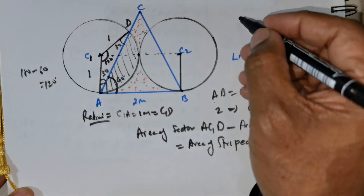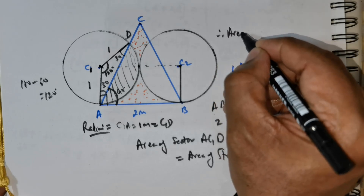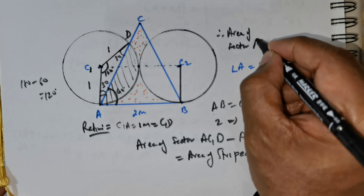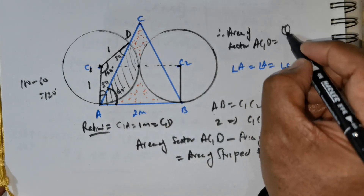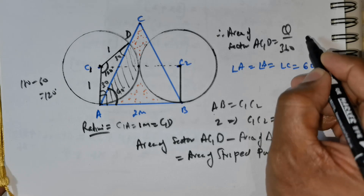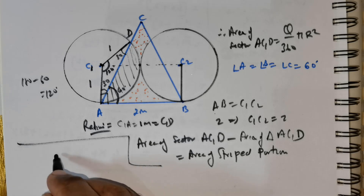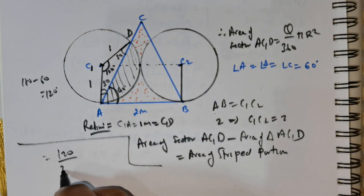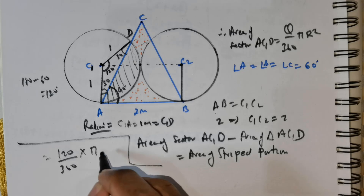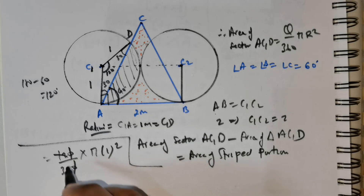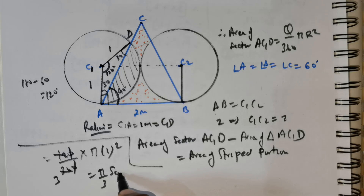So what is the area of the sector? Area of sector AC1D equals theta divided by 360 times pi r squared. Using this formula: 120 divided by 360 times pi times 1 squared. The 120 over 360 simplifies — 12 divides 36 giving 3 — so you get pi over 3 square units. This is the area of the sector.